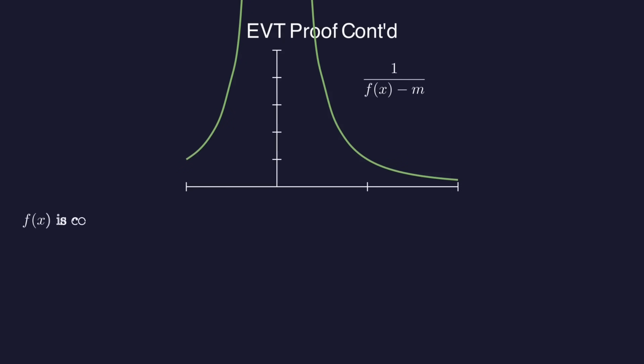The function F is continuous, so F minus M is also continuous. And we know that F minus M is never zero, so 1 over the quantity F minus M is also continuous.